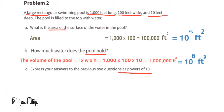For Part B, it's almost exactly the same as Part A, except we're also multiplying by 10, which is 10 to the power of 1. Exponent 5 plus exponent 1 equals exponent 6, and it's three-dimensional. So Part B would be 10 to the power of 6 cubic feet.